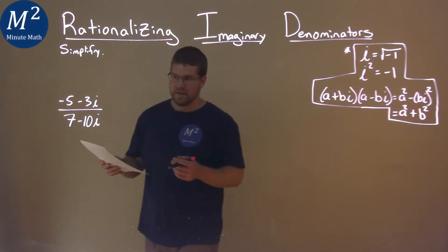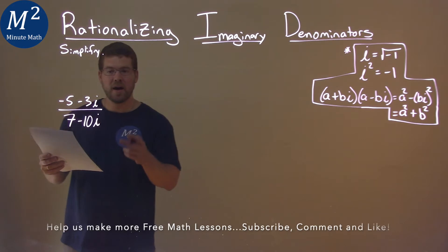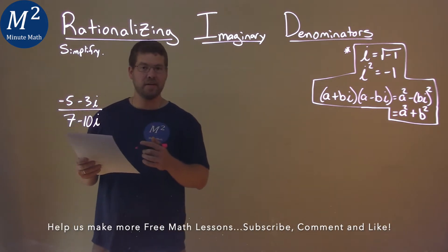We're given this problem right here: negative 5 minus 3i over 7 minus 10i, and we've got to simplify.